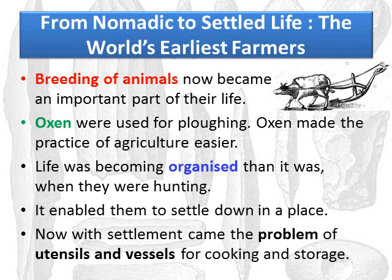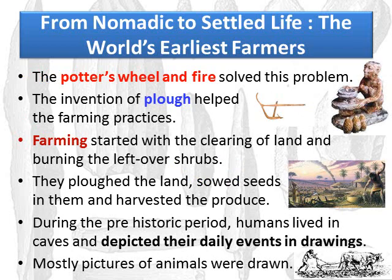Life was becoming more organized once they started agriculture. It enabled them to settle down in one place. With settlement came the problem of utensils and vessels for cooking and storage. The potter's wheel and fire solved this problem. The invention of the plow helped farming practices. Farming started with the clearing of land and burning the leftover shrubs. They plowed the land, sowed the seeds, and harvested the produce.